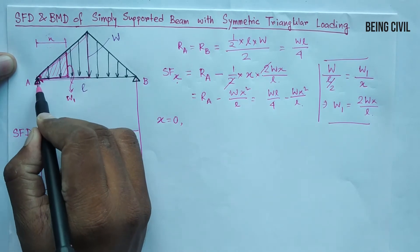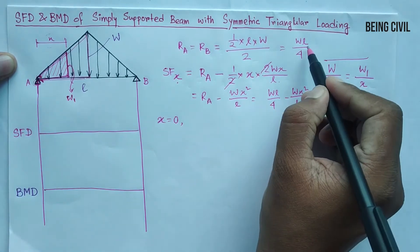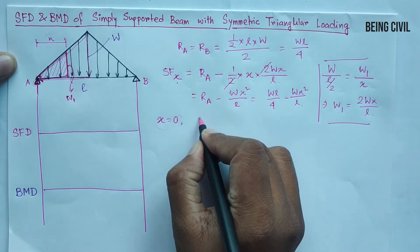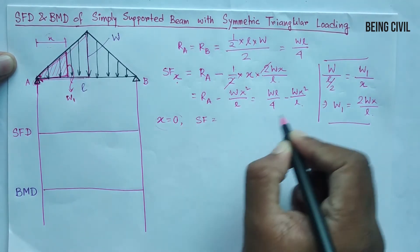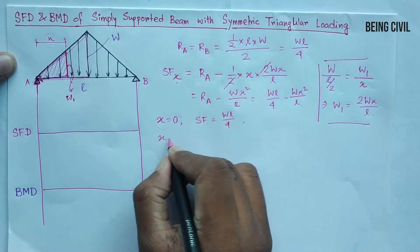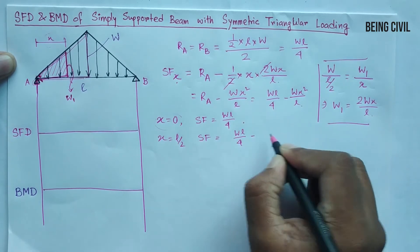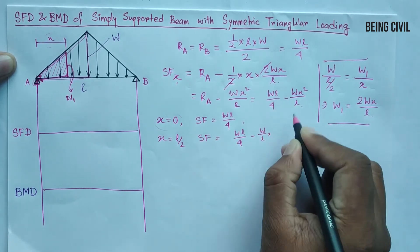At x equal to 0, shear force always equal to the reactions here which is Ra and it is positive which is WL by 4, or you can put the value of x equal to 0 in this equation also. So you get SF equal to WL by 4.